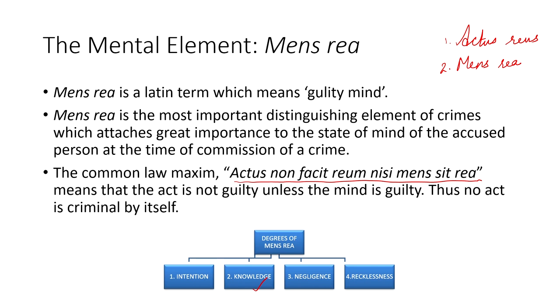Next comes knowledge. Knowledge can exist with or without criminal intention. When knowledge exists with criminal intention, that obviously falls under the first category attracting the highest degree of punishment. But if knowledge exists irrespective of criminal intention — if you know that an act will cause damage, but that is necessary to prevent a bigger damage, or you know it can even cause the death of a person, but unless you do this thing many other people will lose their lives — in such cases even though the accused has the knowledge, the accused does not want the forbidden consequences to ensue. That is the second degree of mens rea, for which there would be a lesser punishment under the law.